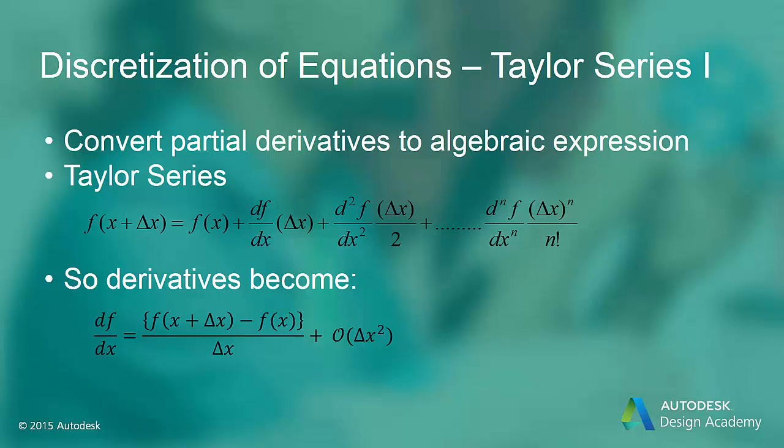Once algebraic equations are available for each point or node in the discrete domain, we can solve the matrix equation. This method of deriving the discrete equation using Taylor series expansions is called the finite difference method. Compared to the finite volume method and finite element method, the finite difference method is the easiest method to understand due to its simplicity.